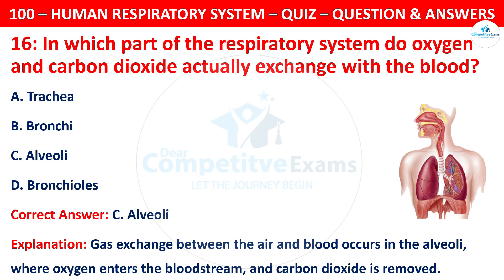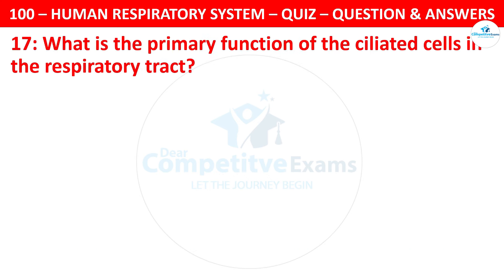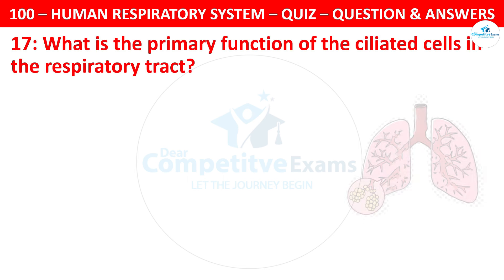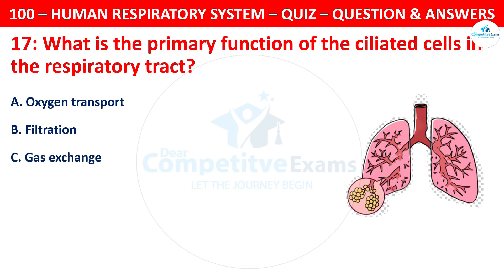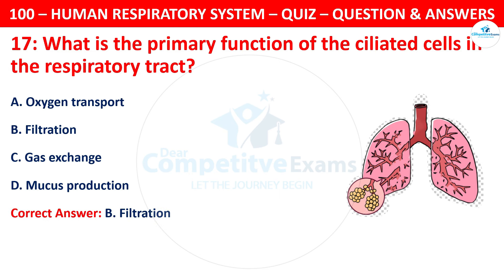Question 17. What is the primary function of the ciliated cells in the respiratory tract? The options are: oxygen transport, filtration, gas exchange, or mucus production. The correct answer is B, filtration.